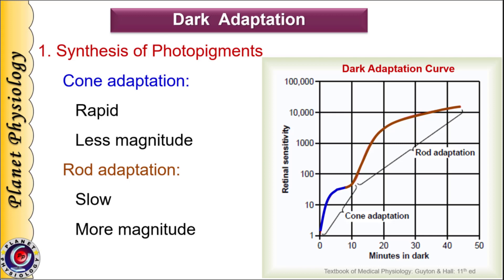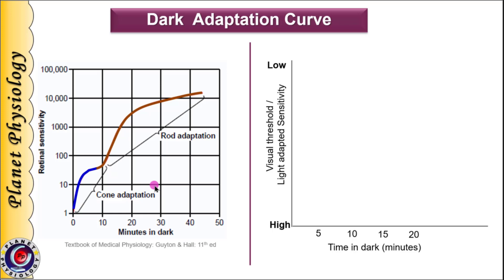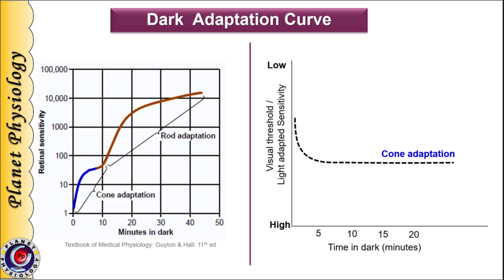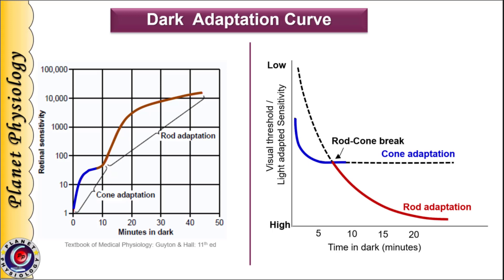Some authors represent this dark adaptation curve in terms of visual threshold of the light-adapted eye, where high sensitivity is at the bottom and low sensitivity is at the top of the Y axis. As per this scale, there is a decline in the cone threshold on exposure to darkness, and after 5 minutes cones reach their maximum sensitivity. At the same time, rods begin to adapt, and rod adaptation continues for a longer time. This switchover from cones to rods is called the rod-cone break or rod intercept.